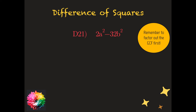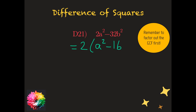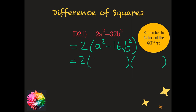Whenever you have two terms with a minus sign, think difference of squares. The first step is still to take out the GCF, which is 2, leaving a² − 16b². Now a² is a perfect square, 16 is a perfect square, and there's a minus sign — perfect conditions for difference of squares. I make two brackets: a × a gives a², and 4b × 4b gives 16b². Factoring a difference of squares always gives two conjugates, so the answer is 2(a + 4b)(a − 4b).